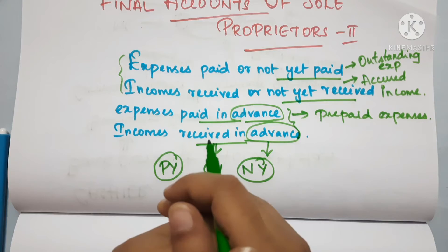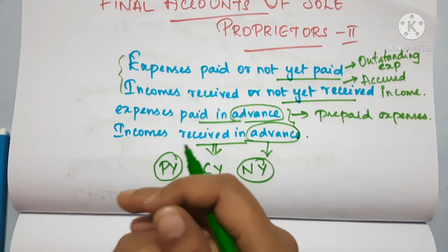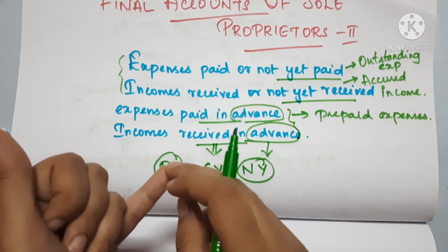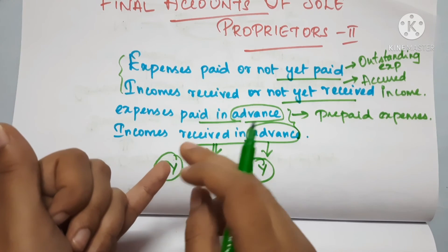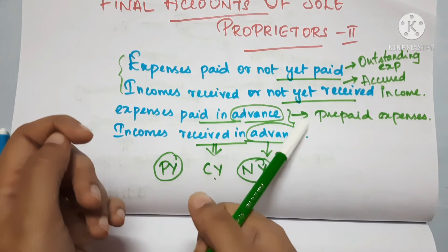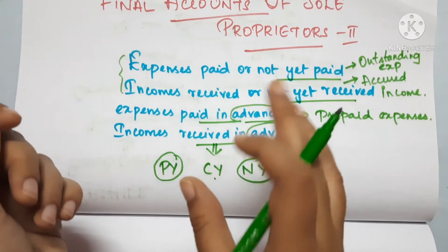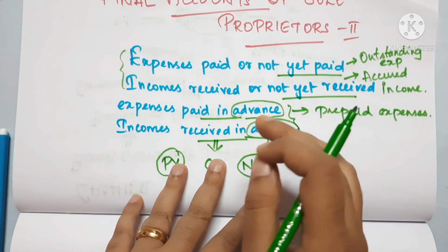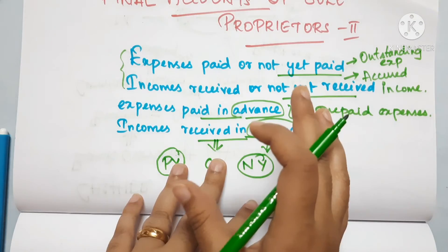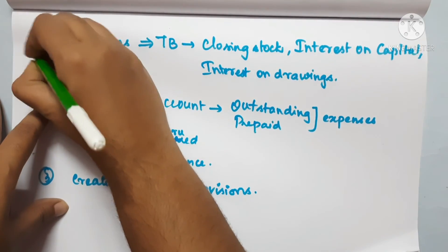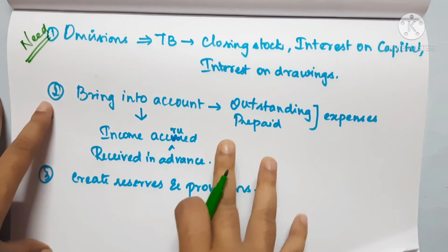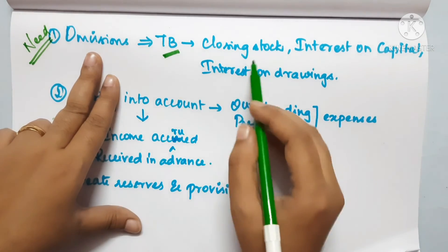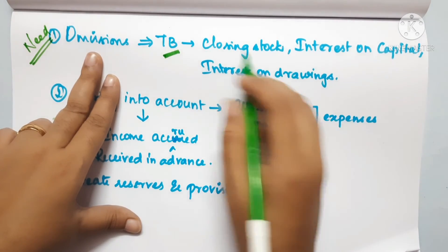Next, we will talk about what we need to prepare for adjustment entries. One reason is to balance our accounts — trial balance entries may be missing at the time of preparation. That is why we need adjustment entries. Adjustment entries include outstanding expenses, accrued income, or prepaid expenses received in the next year. Common omissions from the trial balance include closing stock, interest on capital, and interest on drawings.